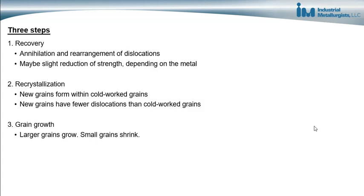During the annealing process, there are three steps of changes that occur inside of the metal. The first step is recovery, which involves annihilation and rearrangement of dislocations, resulting in a slight reduction of strength. The next step is recrystallization, where new grains form from the cold work grains and grow together to replace them, resulting in fewer dislocations. After that, grain growth occurs, where larger grains continue to grow and smaller grains shrink.